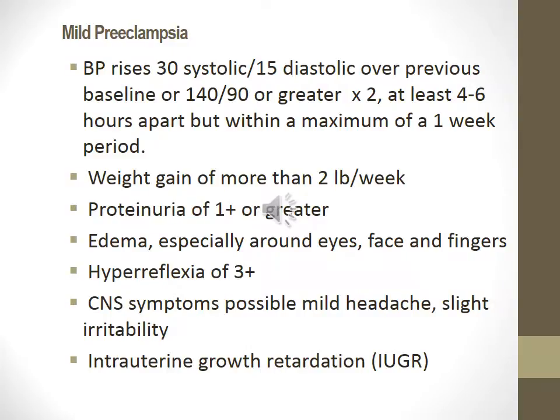Let's discuss mild preeclampsia. Blood pressure rises 30 systolic to 15 diastolic over previous baseline, or 140 over 90 or greater, taken at least 4 to 6 hours apart but within a maximum of one week period. Weight gain of more than 2 pounds a week. Proteinuria of 1+ or greater. Edema especially around your eyes, face, and fingers. Hyperreflexia of 3+. Central nervous system signs include possible mild headache and slight irritability. Intrauterine growth retardation is also present.